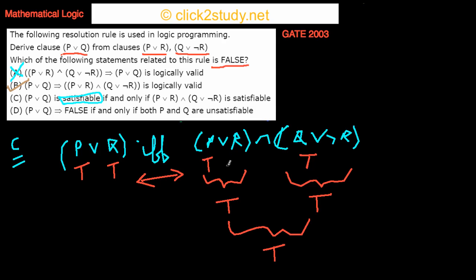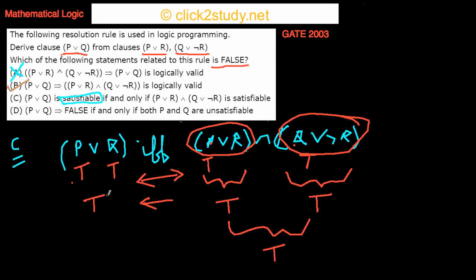Going from right to left in option C, if (P or R) and (Q or not R) is true, you can set P = true and Q = true to also make (P or Q) true. For option D, it is quite simple — (P or Q) is unsatisfiable only when both P and Q are false, which is straightforward. So we are done; the answer is option B.